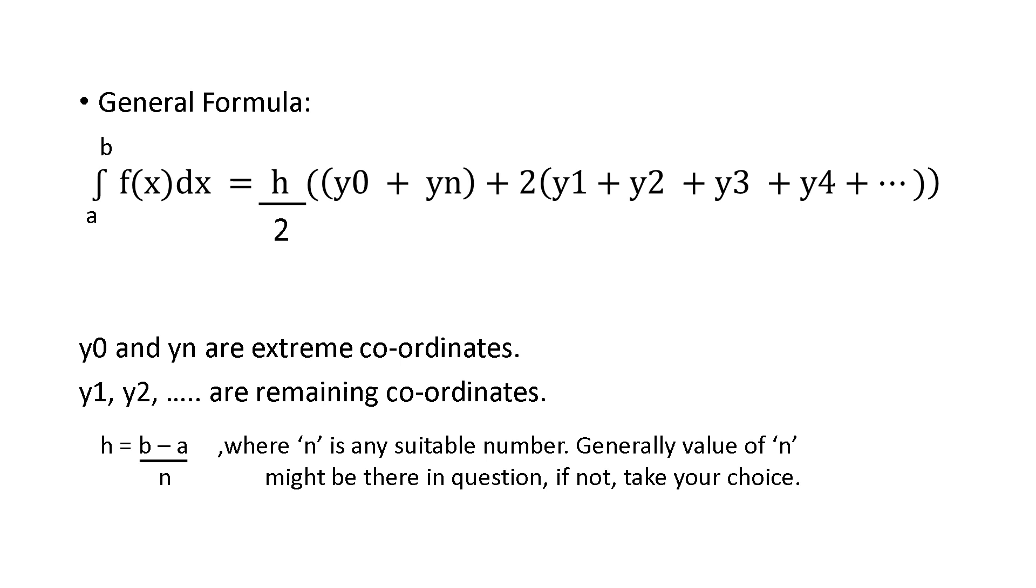The general formula for trapezoidal rule is integration of a to b f of x dx equals h by 2 into y0 plus yn plus 2 into y1 plus y2 plus y3 plus y4 etc.